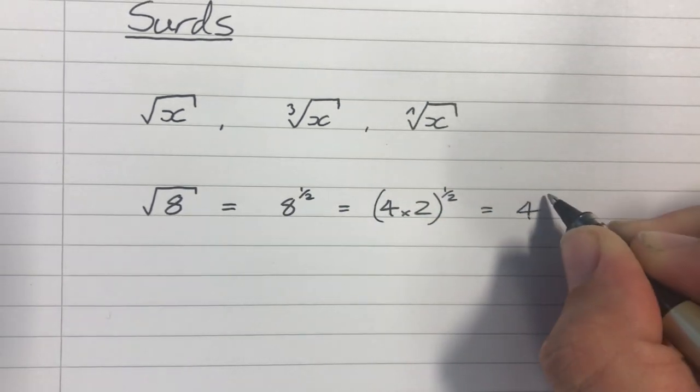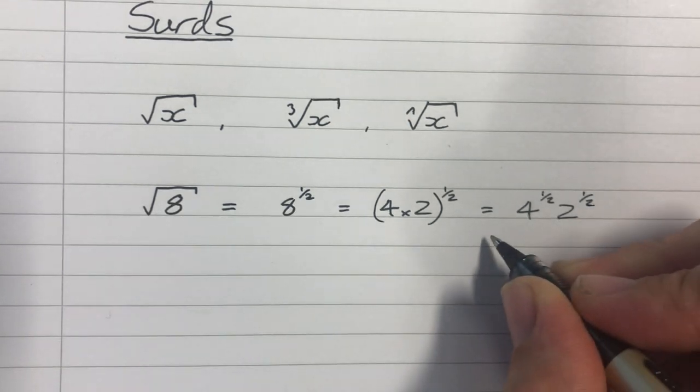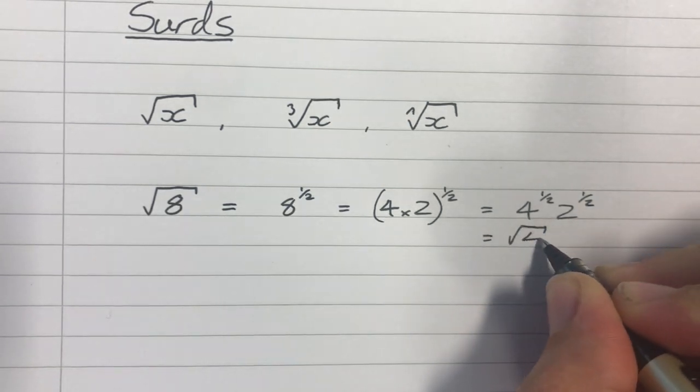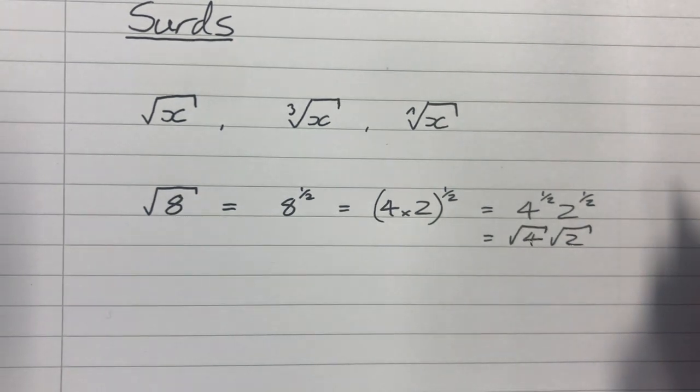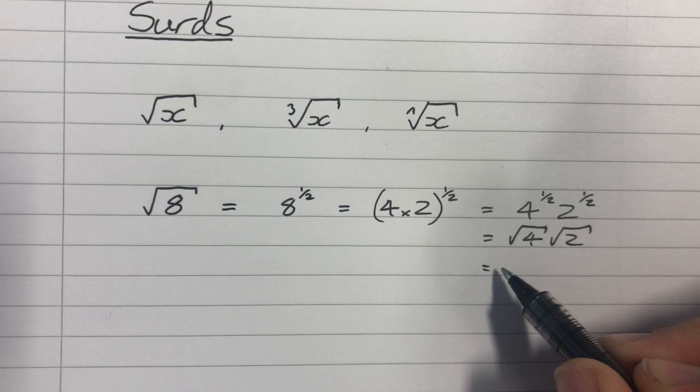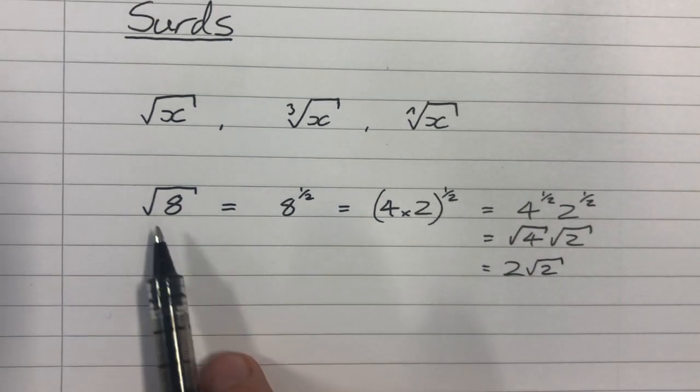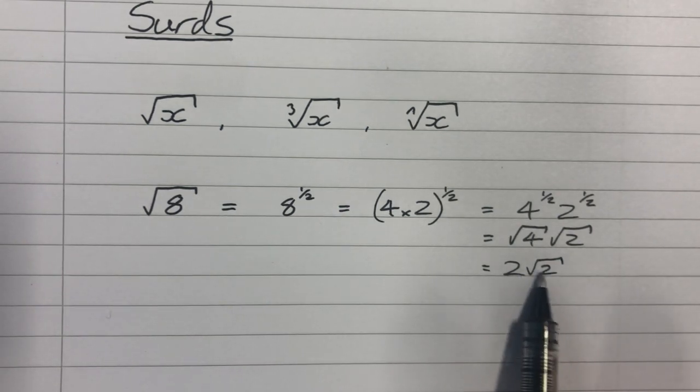That's equal to 4 to the half times 2 to the half, which is root 4 times root 2. But root 4 is an integer, because 4 is a square number. So we can write it as 2 root 2. So root 8 is the same as 2 root 2.